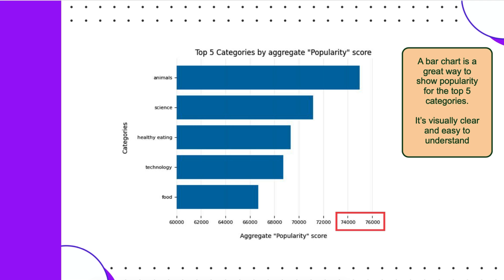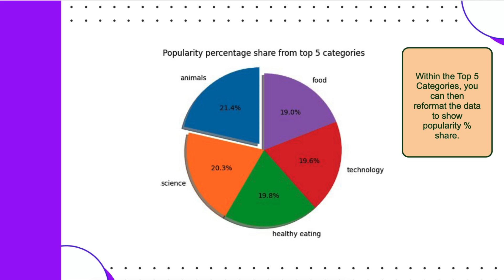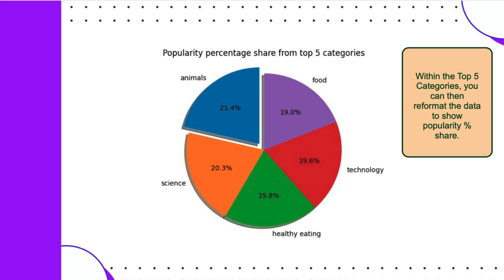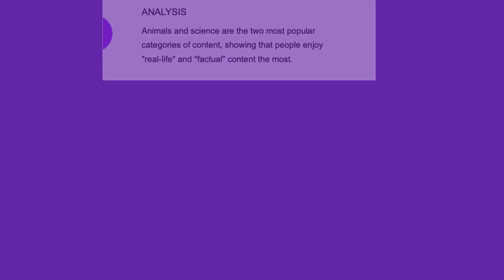Additionally, you can see the pie chart showing the percentage shares from the top five categories. There is not much difference between the share of each category; however, the difference between animals and science is the largest gap at 1.1%. In business terms, this means that the animals category stands out from all of the others.